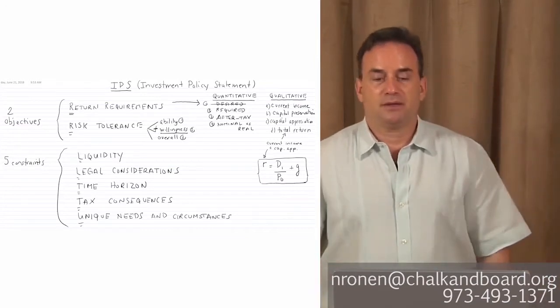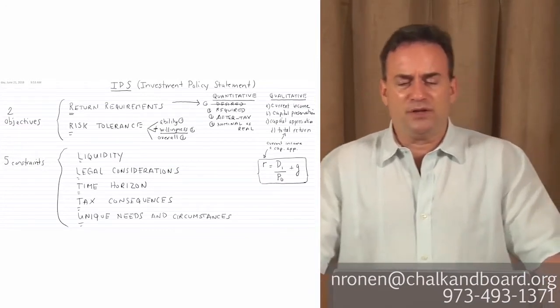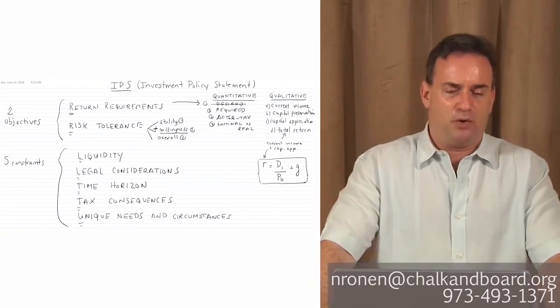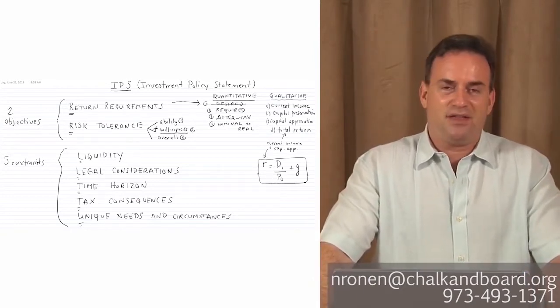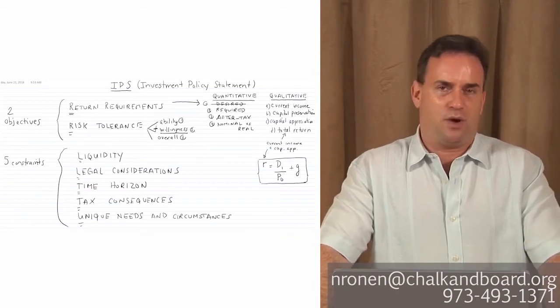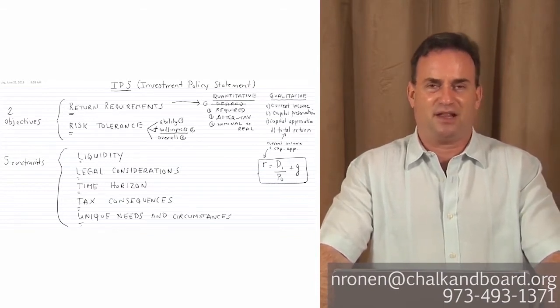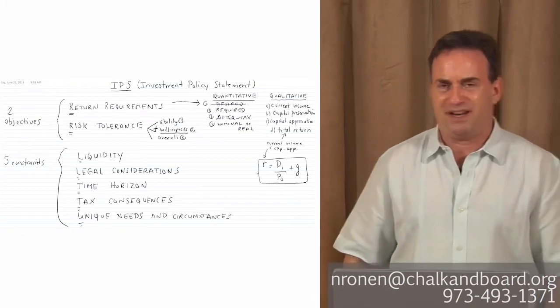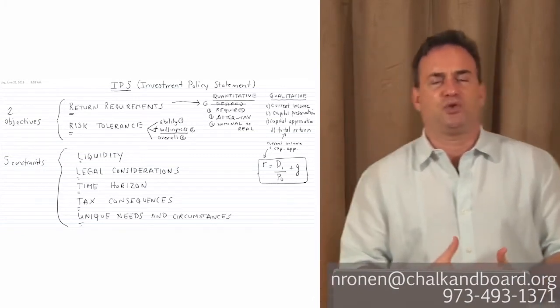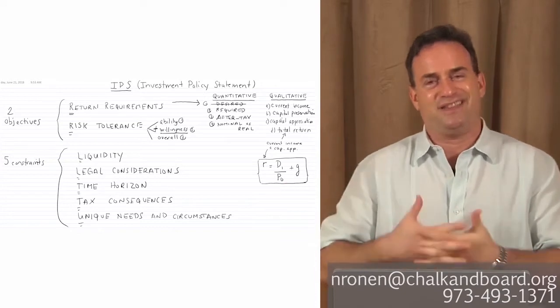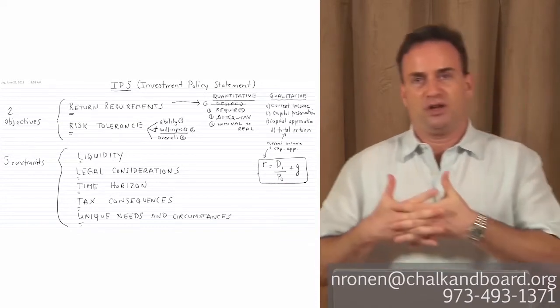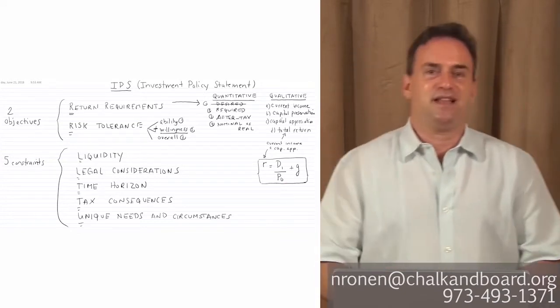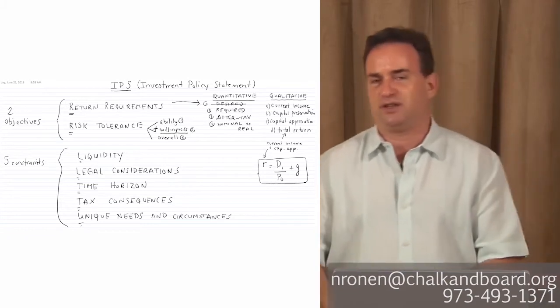Now, why don't we talk about each of the components of the objectives and the constraints? And then once I've articulated that, there's one other thing I wanna go over, which is strategic asset allocation versus tactical asset allocation. And then we're pretty much done with this reading. My job here is to make sure that you understand the material in the context of which the exam is gonna test it.